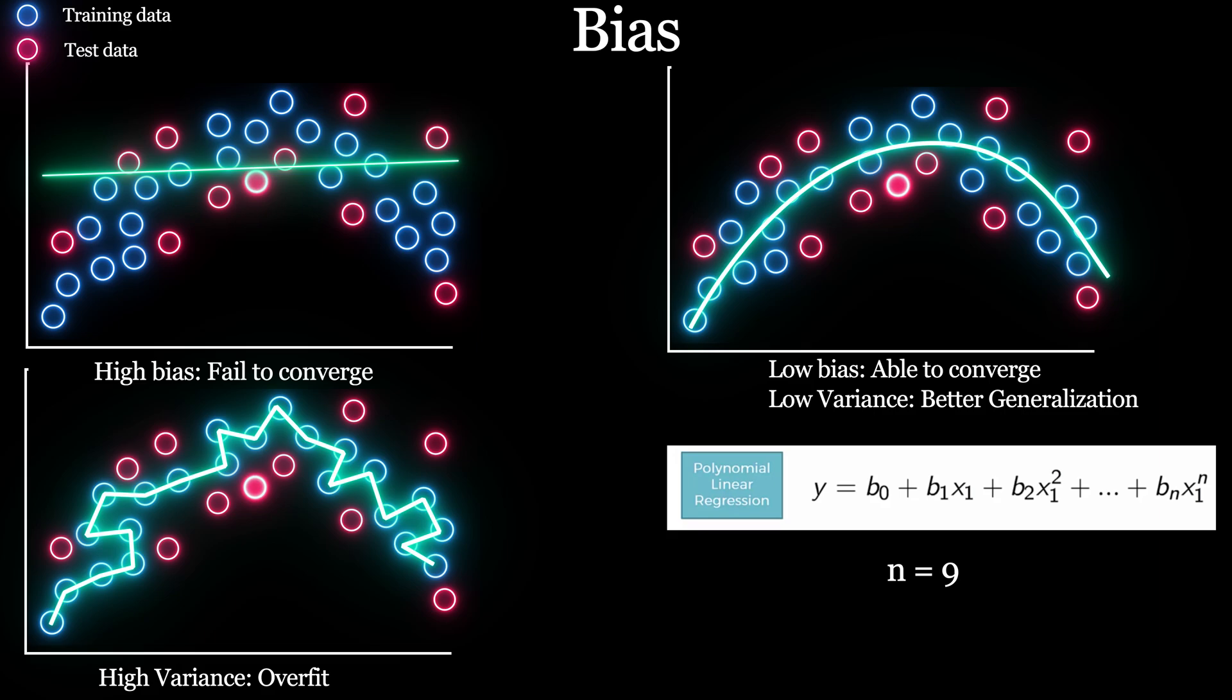Variance is something which indicates how sensitive and consistent your model is with respect to change in dataset. In this case, the error on training dataset is low but when you use the same model to perform on test dataset, the error will be too high. So this happens when a model has high variance.